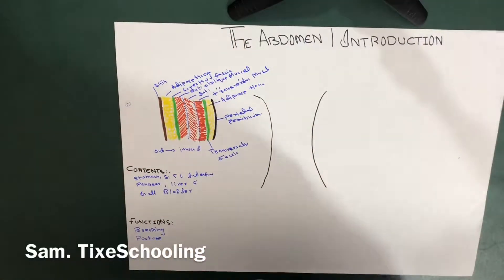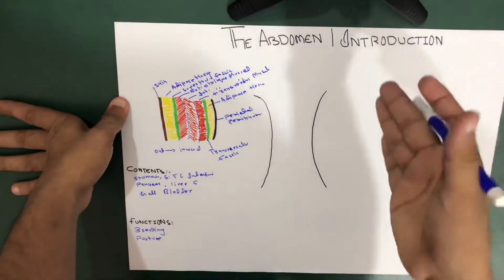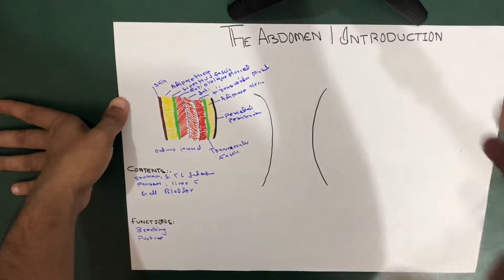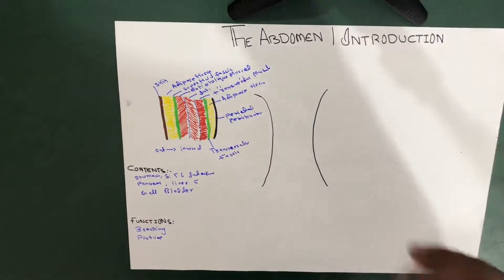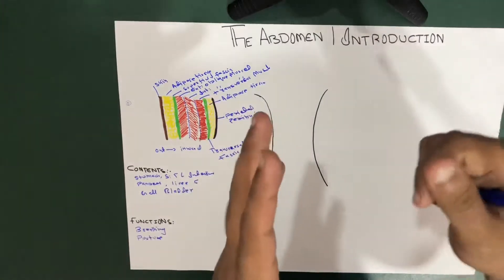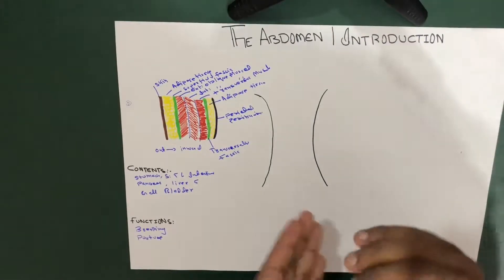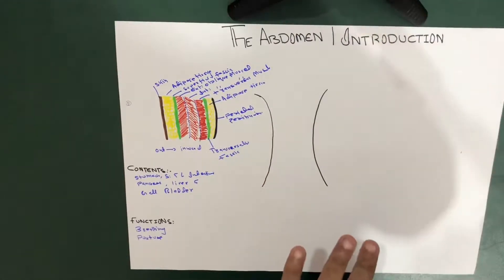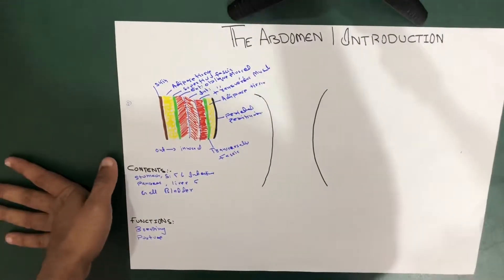Hello YouTube, this is Sam from Tiger Schooling and we're going to start a series of lectures on the abdominal region. This is just an introduction; in further videos we'll make detailed videos about every part and every muscle in the abdominal region. The abdomen, also called the midriff or belly, is the body space between your thorax and pelvis. The upper part is formed by the diaphragm and the lower part by the pelvis at the pelvic brim.